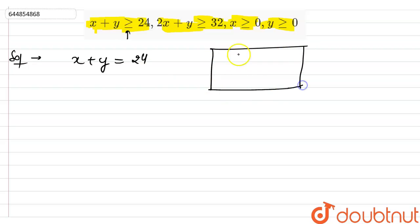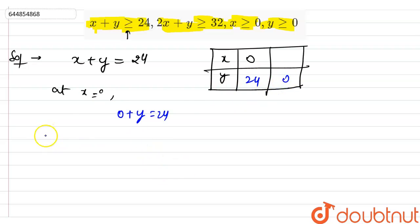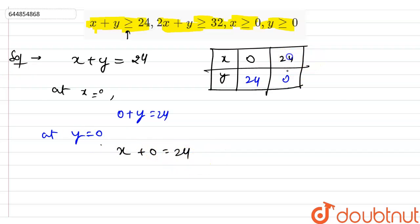I'm making a table and putting in the values. At x equals to zero, my y will be: zero plus y equals to 24, so y equals to 24. At y equals to zero, my x will become 24. So the two coordinates are (0, 24) and (24, 0).